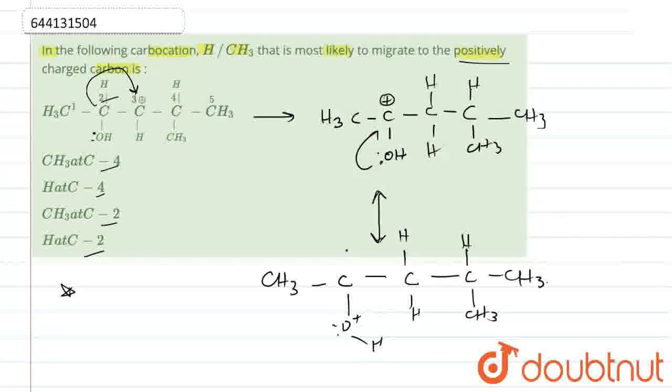So, we can say that the hydride shift from C2 will give the most stable resonance stabilized carbocation. The correct answer for this question, we have seen that hydride shift from C2. So, the correct option for this question is H at C2. The correct option is option D. Thank you.